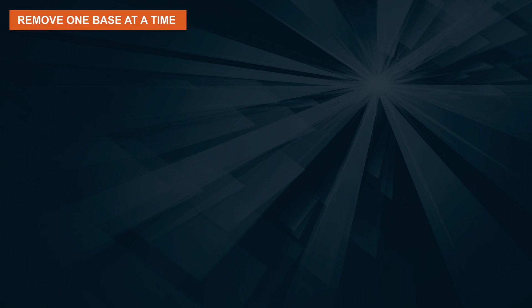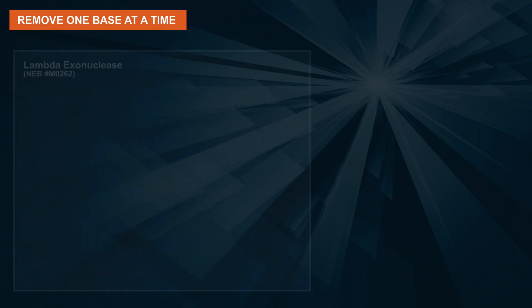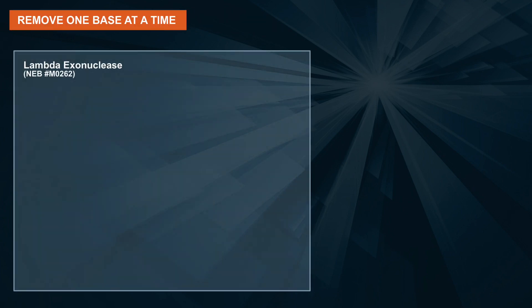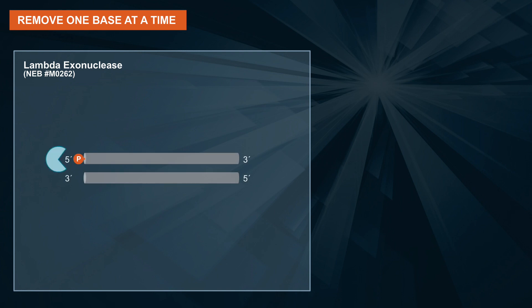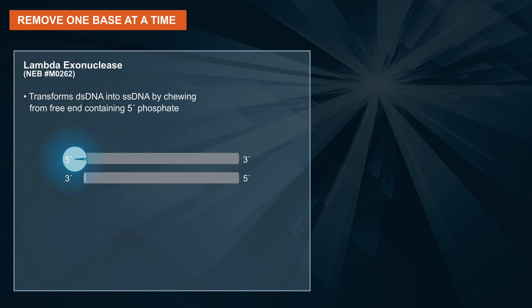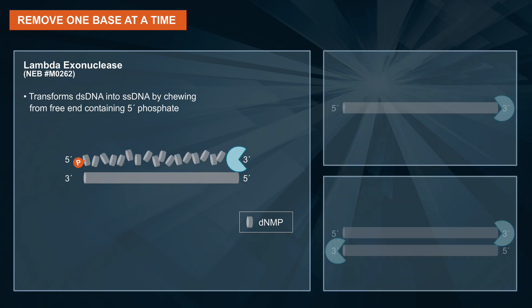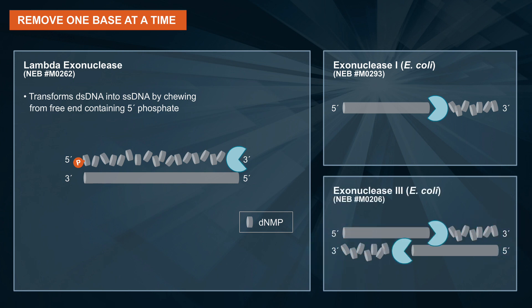Some exonucleases remove one base at a time. Lambda exonuclease is an example of this and transforms double-stranded DNA into single-stranded DNA by chewing from the free end containing a five prime phosphate, degrading one strand preferentially but not the other. Other examples are Exo1 and Exo3.